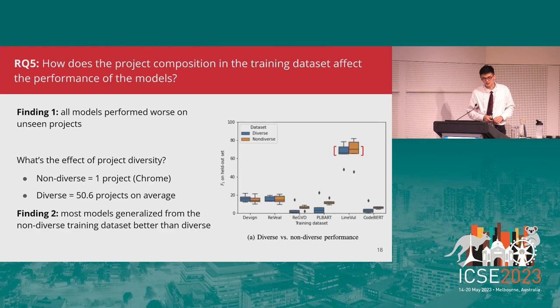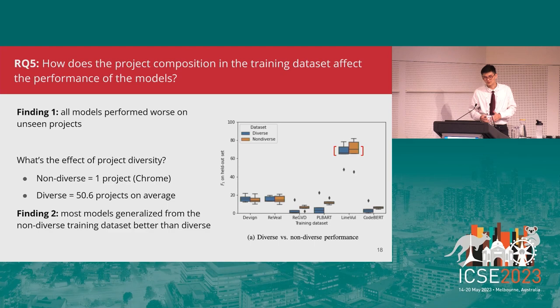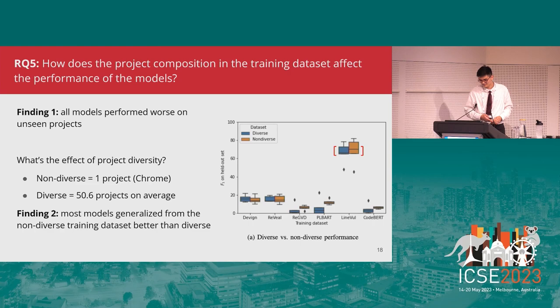For the next research question, we asked: how does the project composition in the training dataset affect model performance? We confirmed that all models performed worse on projects not seen in training. To dig deeper, we studied the effect of project diversity, preparing a non-diverse training dataset with one project — the Chrome browser — and a diverse training set with 50.6 projects on average, then evaluating both on the same held-out test set of unseen projects. Surprisingly, most models generalized better from the non-diverse training dataset than the diverse one, indicating that diversity alone is not sufficient for generalization to novel projects.